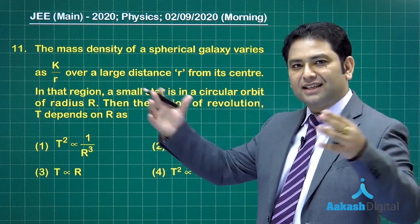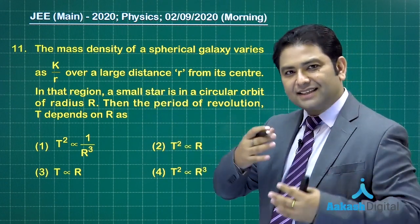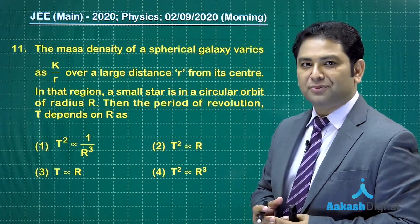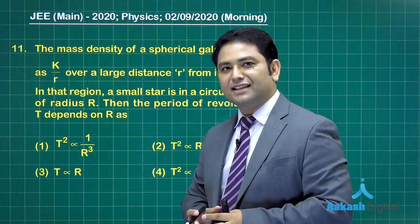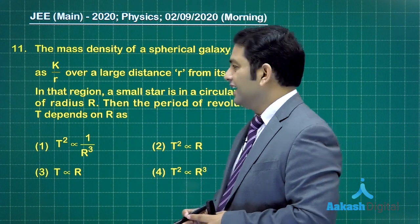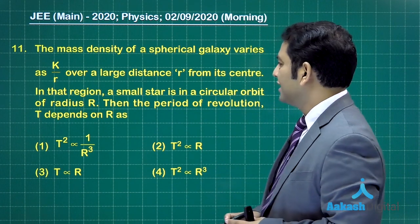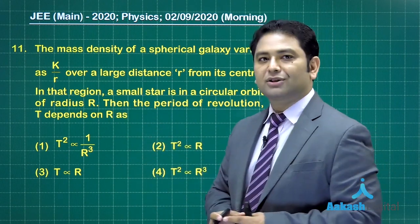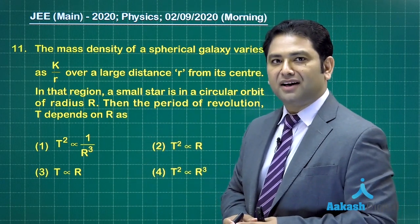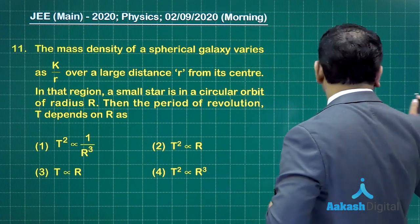You can see that spherical galaxy extending till infinity. The only difference is that the density is variable and we need to see the time period of revolution of a small star which moves in a circular orbit of radius capital R. So it's something like this.